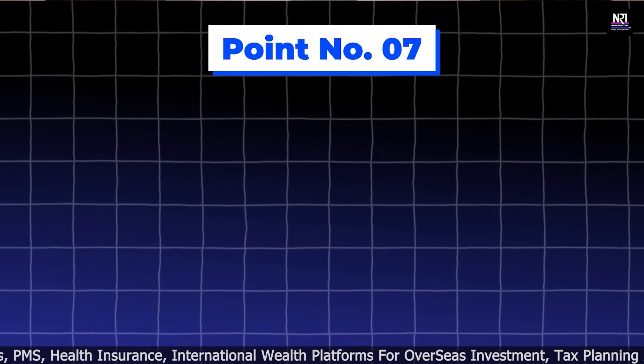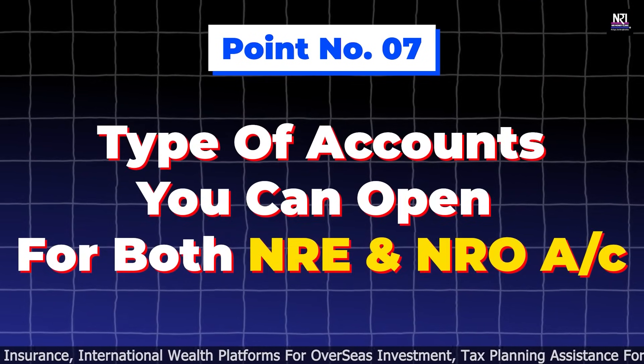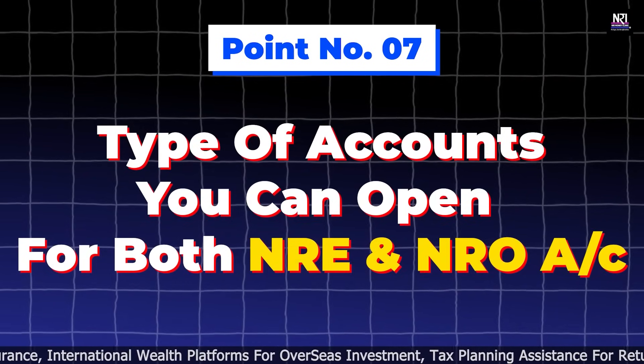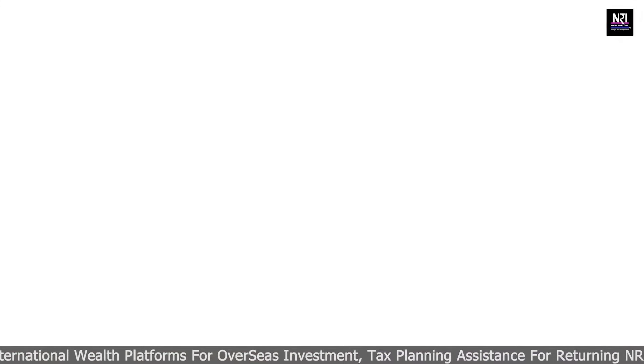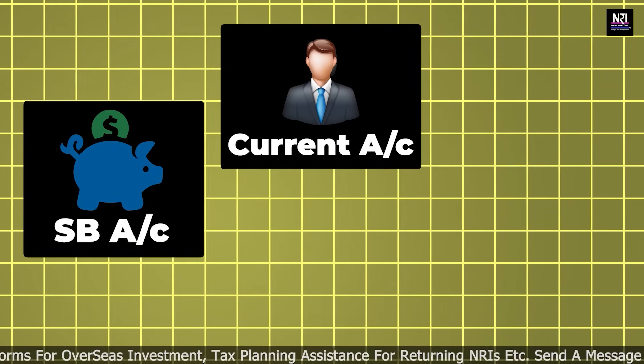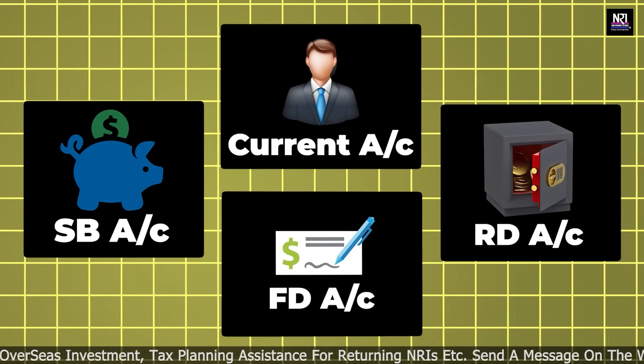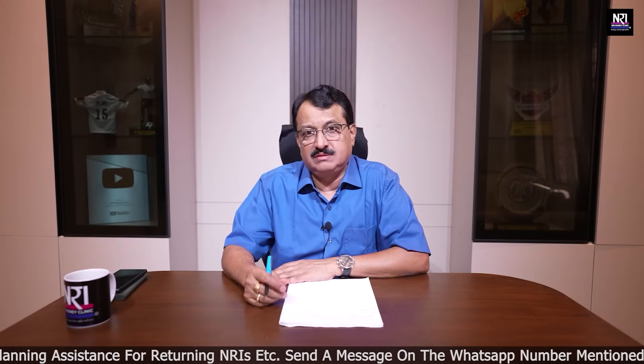Point number seven: the types of accounts available under NRE and NRO. You can hold a savings bank account, current account, recurring deposit (RD) account, and fixed deposit account — and these account types are the same for both NRE and NRO accounts.